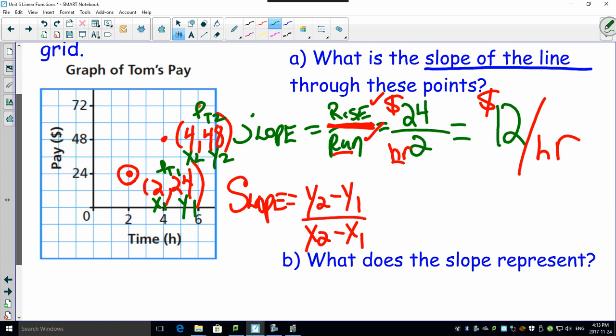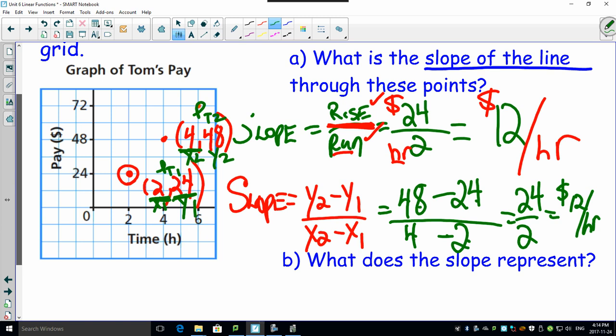Just plug it in. So y2 is equal to 48 minus y1, which would be 24, over x2, which would be 4, minus x1, which would be 2. 48 minus 24 is 24. 4 minus 2 is 2. And look at that, 24 divided by 2 works out to be $12 per hour. There you go, there's the slope and that's what he gets paid an hour. Now let's take this one step further. Let's look at another type of question which isn't necessarily obvious.